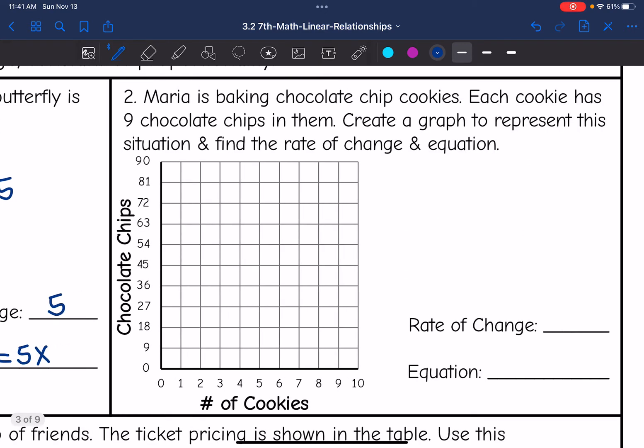Let's look at number two. It says Maria is baking chocolate chip cookies. Each cookie has nine chocolate chips in them. Create a graph to represent the situation and find the rate of change and equation. So if she has zero cookies, she's used zero chocolate chips.